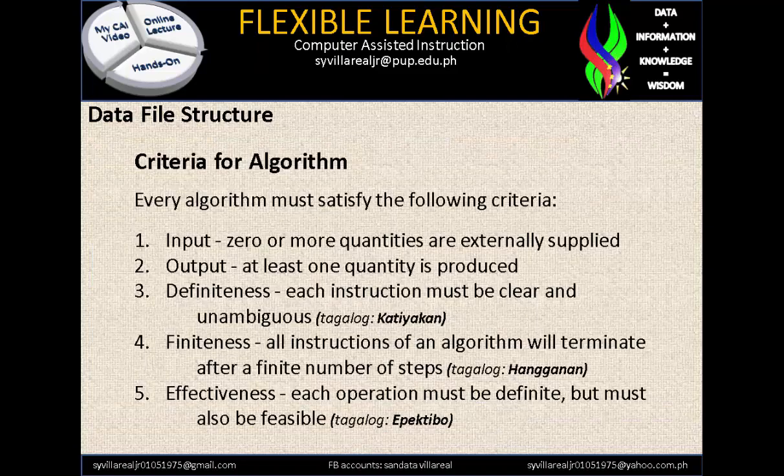So we have the criteria for Algorithm. Every algorithm must satisfy the following criteria: Input, Output, Definiteness, Finiteness, and Effectiveness. We have five criteria for Algorithm, and without these five, there is no such thing as a proper algorithm.